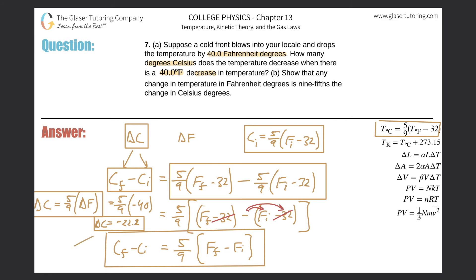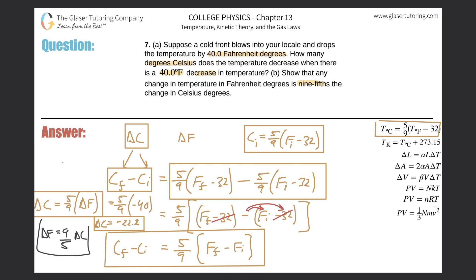That answer makes sense — if the Fahrenheit temperature drops by 40, the Celsius temperature should also drop, just by a five-ninths proportion, which is 22.2 degrees. For part b, they ask us to show that the change in Fahrenheit equals nine-fifths times the change in Celsius. Taking our formula and solving for change in Fahrenheit, we multiply both sides by the reciprocal nine-fifths, giving change in Fahrenheit equals nine-fifths times the change in Celsius. Thanks for tuning in — please remember to subscribe!